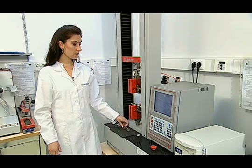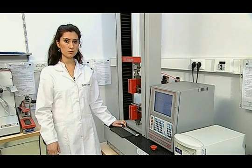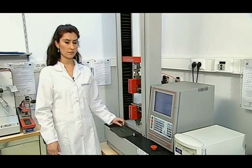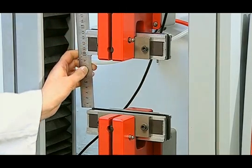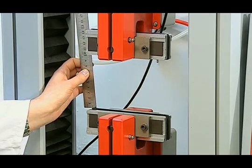Then, the distance between the two jaws, namely the length of the indicator, is set to 100 mm. It is checked whether or not the distance between the two jaws is 100 mm with a ruler.